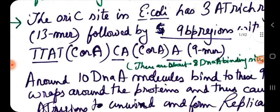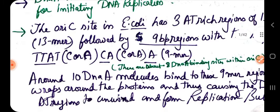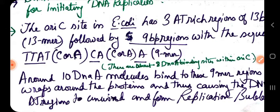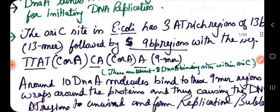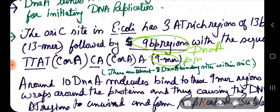These 9-mer regions are also called DnaA binding sites — these nine base pair regions are the sites where DnaA first binds. They are also known as DnaA binding sites because DnaA first binds at these sites. There are about eight DnaA binding sites within the origin of replication.